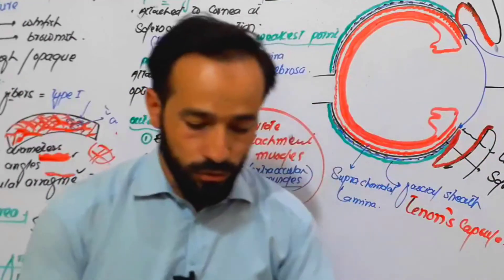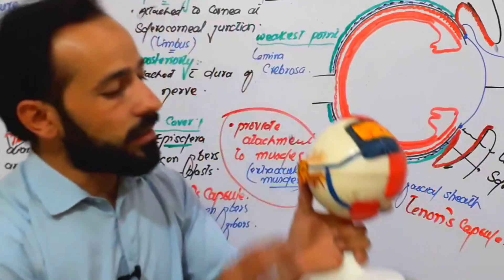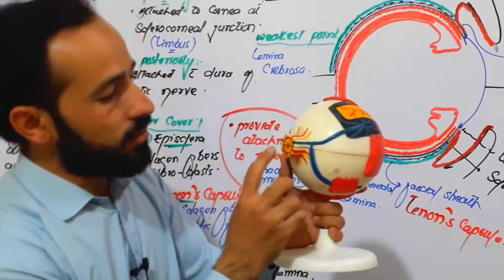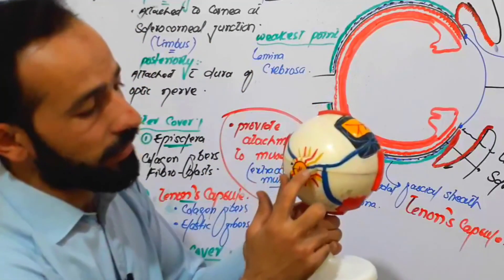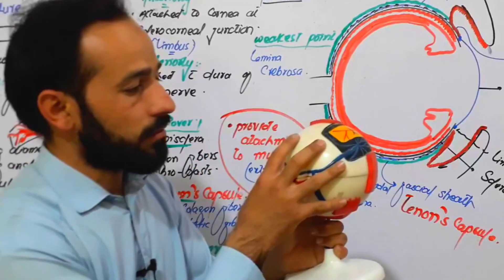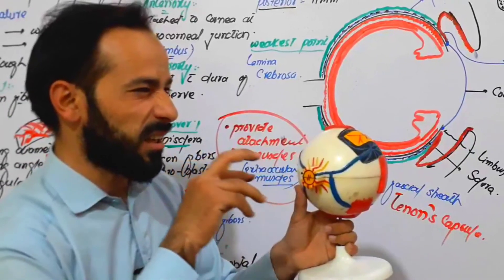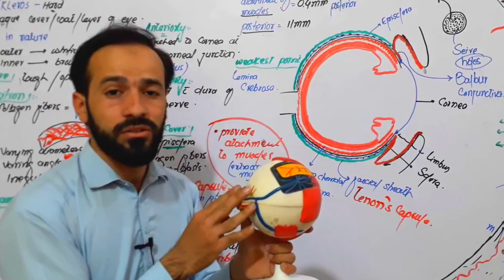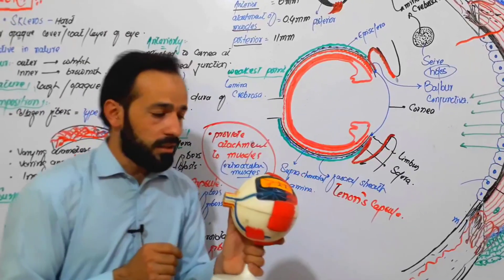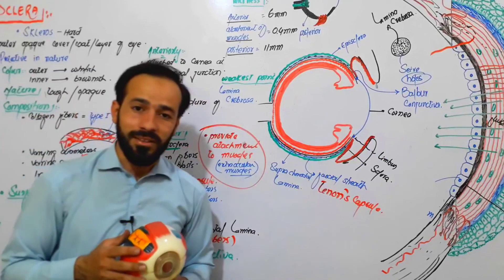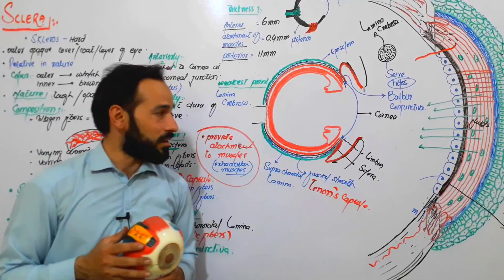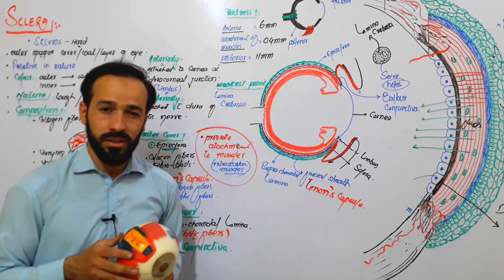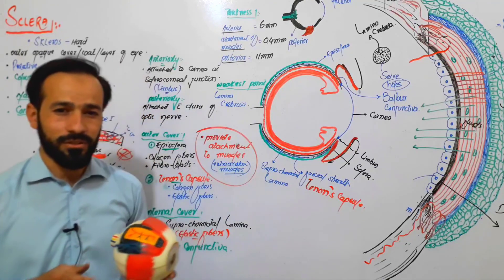In the next lecture we will discuss what structures are passing through the sclera — arteries, veins, and nerves which pierce the sclera and enter the eye inside. Those structures which pass through the sclera will be discussed in the next lecture. Please share and subscribe to our channel and share these videos with your friends. See you in the next lecture.